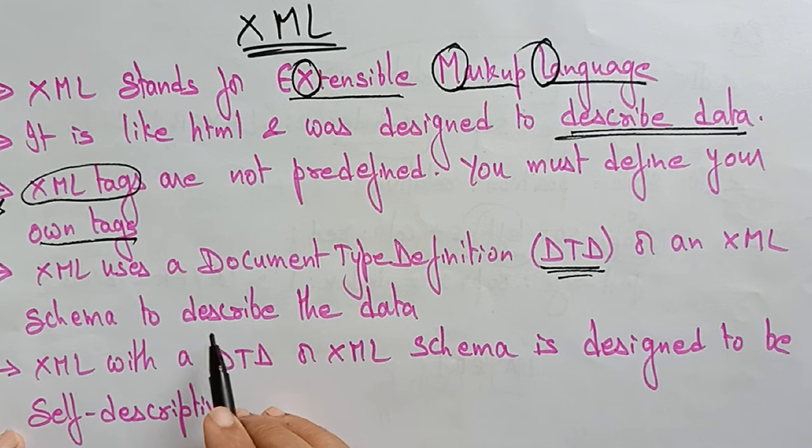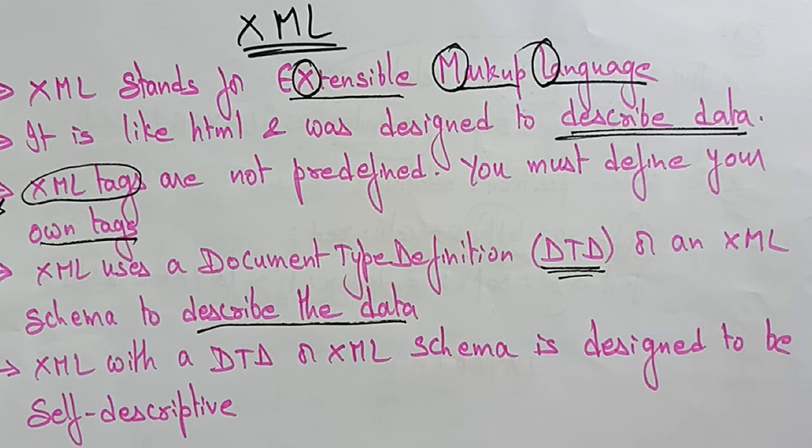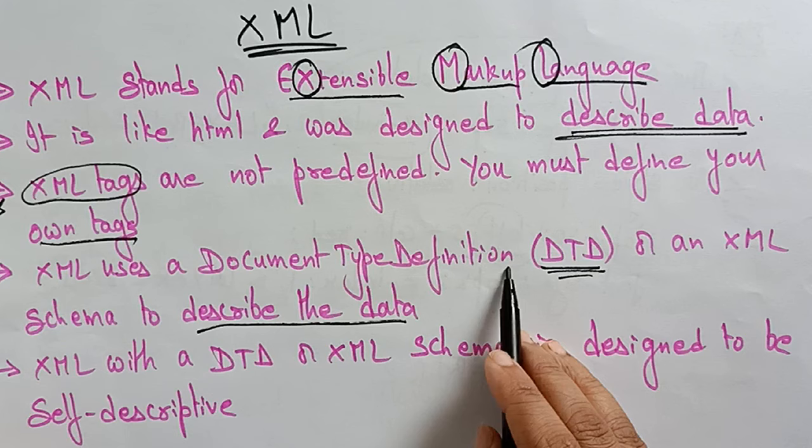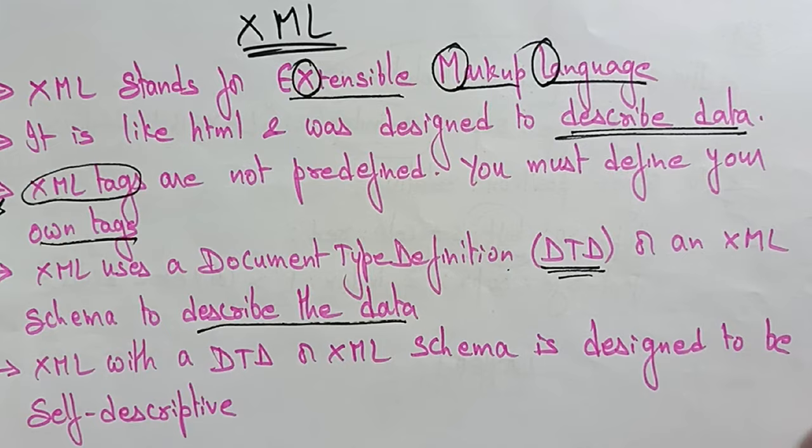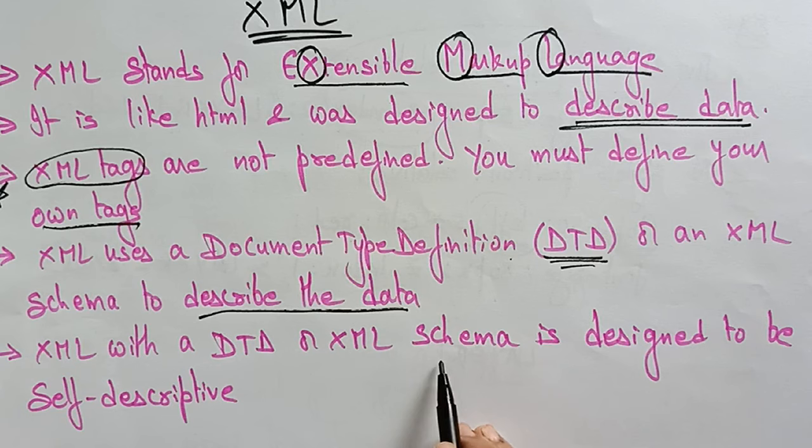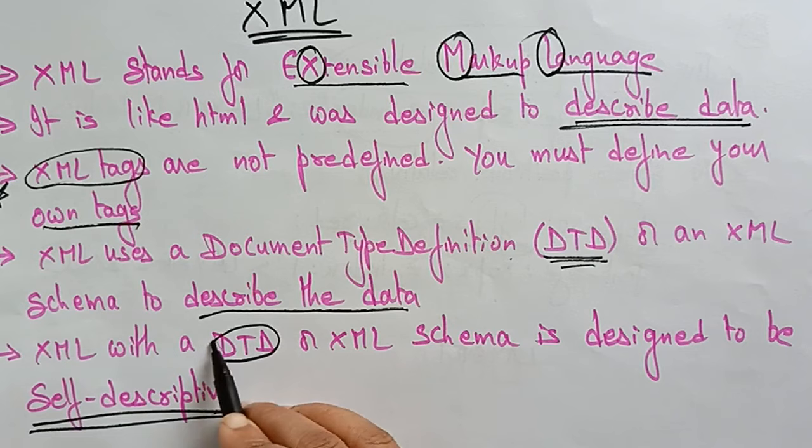What is the use of XML? XML is designed to describe the data. How? By using the Document Type Definition or XML schema, which is used to describe the data. XML with a DTD or XML schema is designed to be self-descriptive.